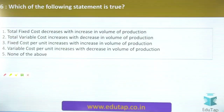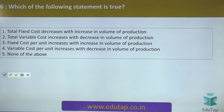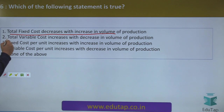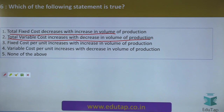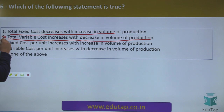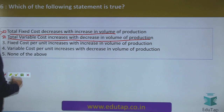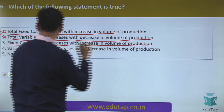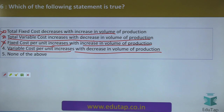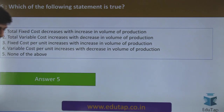Going back to the question — which of the following is true? Total fixed cost decreases with increase in volume — no, fixed cost remains the same. Total variable cost increases with decrease in volume — no, it increases with increase in volume. Fixed cost per unit increases with increase in volume — no, it decreases. Variable cost per unit increases with decrease in volume — no, variable cost per unit remains the same regardless of volume. So the right answer is option number five.